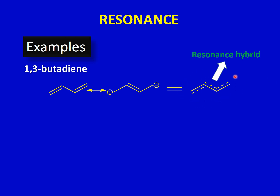These different forms are just to show the delocalization of electrons. We can write the molecule as a resonance hybrid in which the double bonds are shown with broken lines spread over the whole molecule, showing that electron density is distributed evenly among all four carbon atoms. This broken line indicates there is no true double bond between carbons one and two or three and four, and no true single bond between carbons two and three.